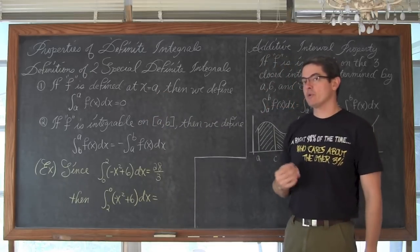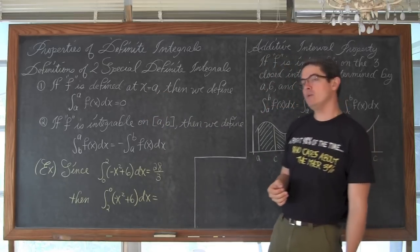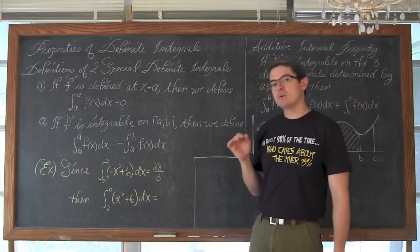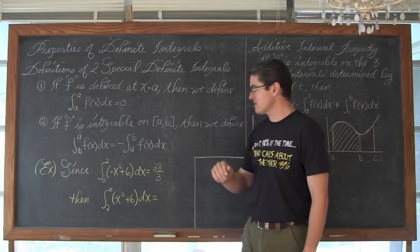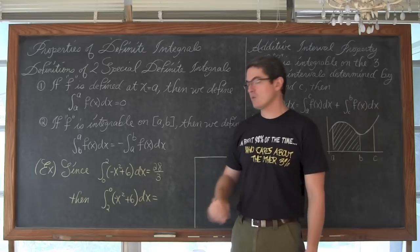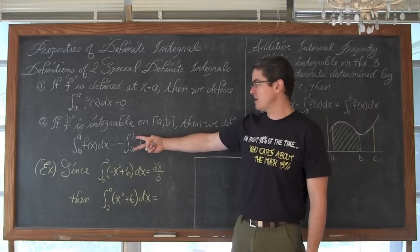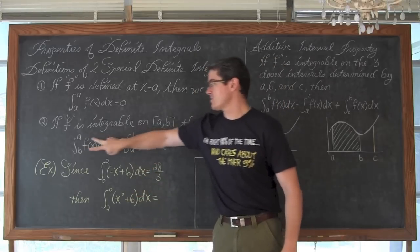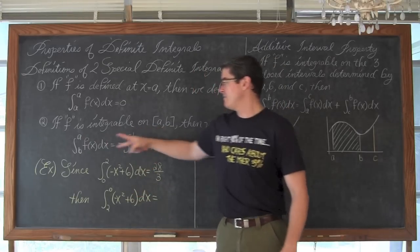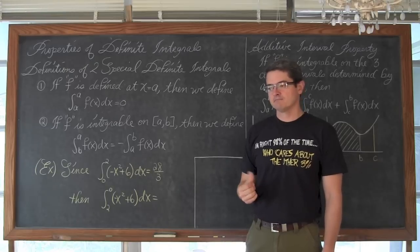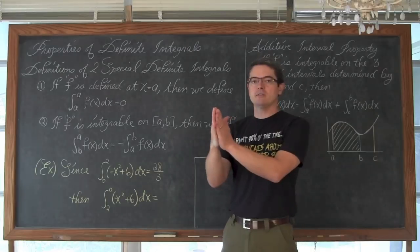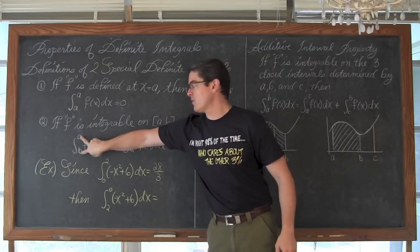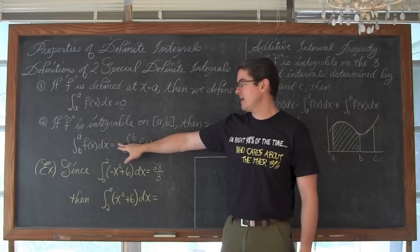If function f is integrable on the closed interval of a, b, then we define the definite integral of f dx from b to a is going to be equal to the same function f dx. We are still doing a definite integral, but see our lower and upper bounds have been swapped. We have b, a, and now we have a, b. So those values have switched places. So we are sort of like maybe instead of reading the axis left to right, we are reading it from right to left. Well, when you do that, when you take those lower and upper bounds and you swap places, you are going to get the opposite answer.